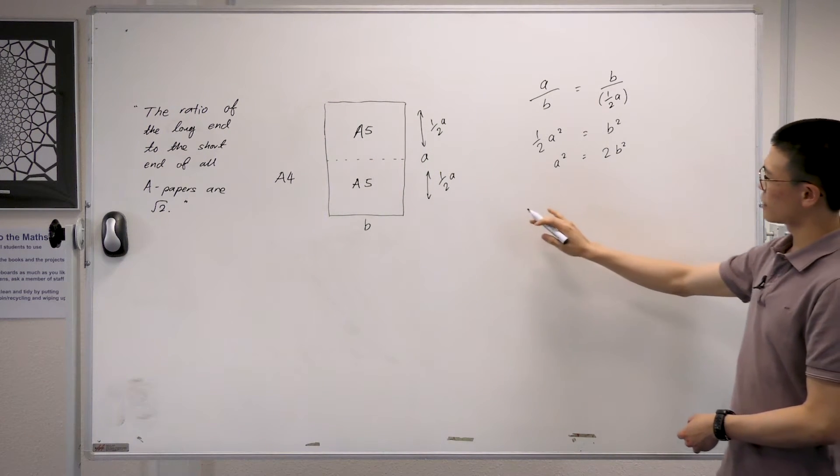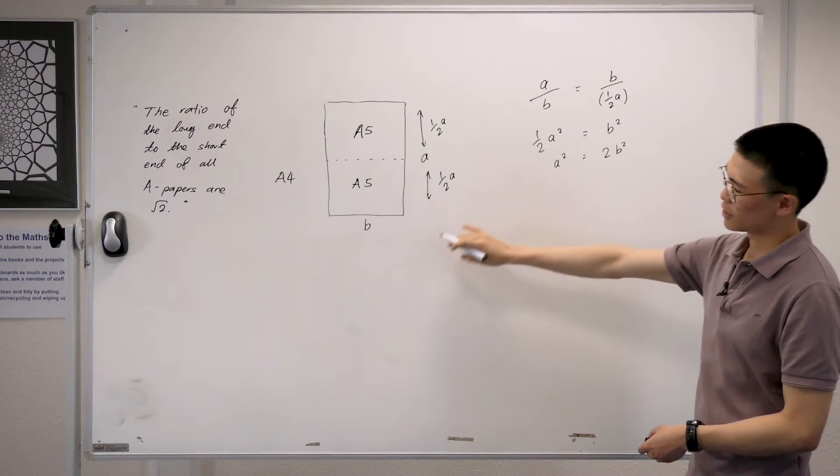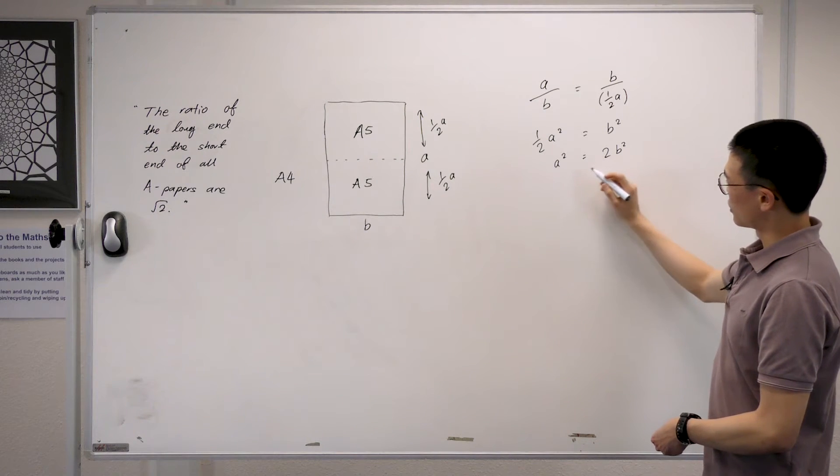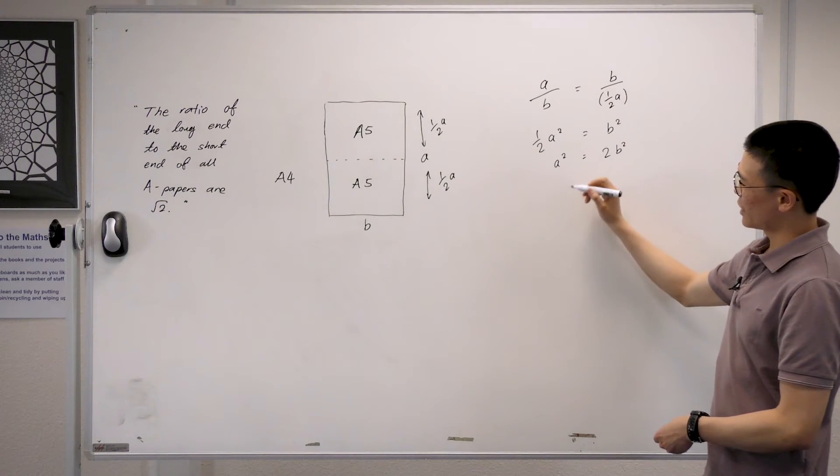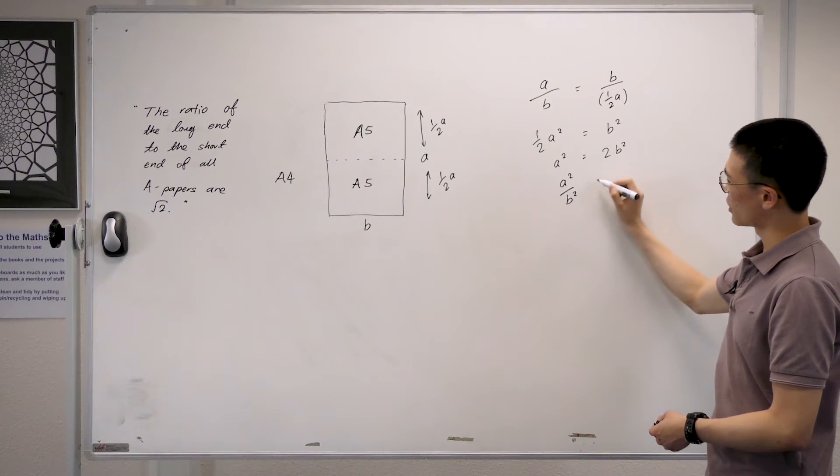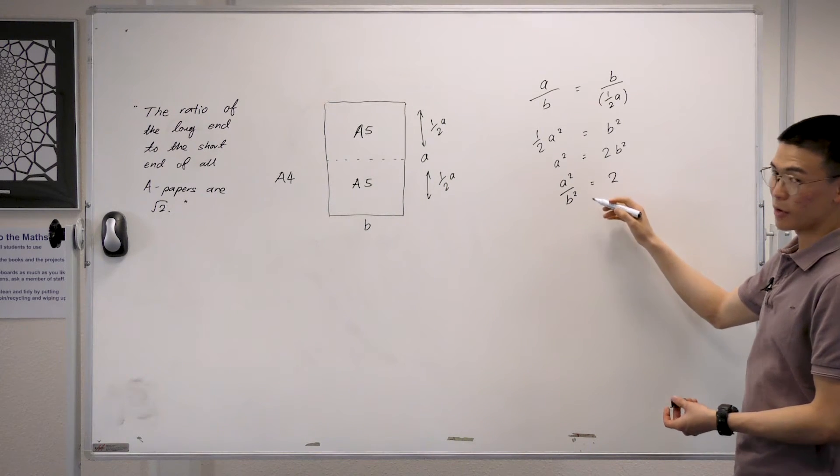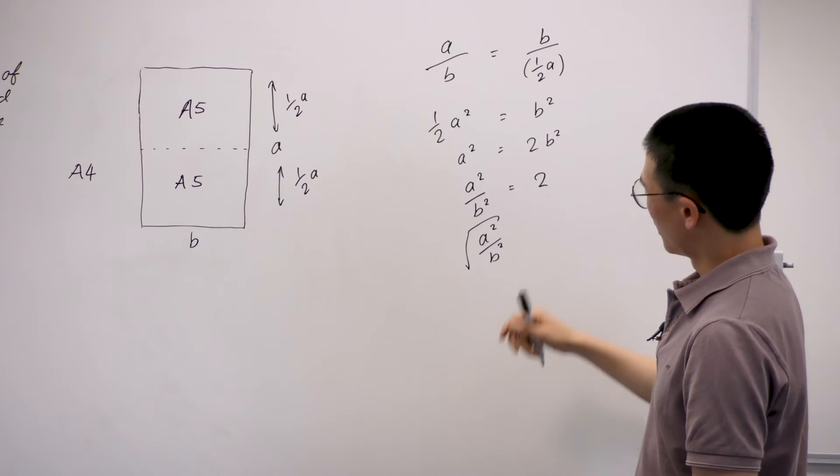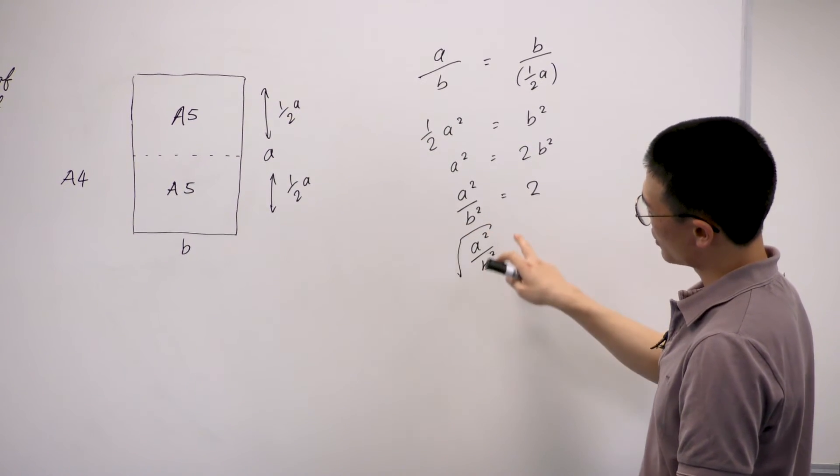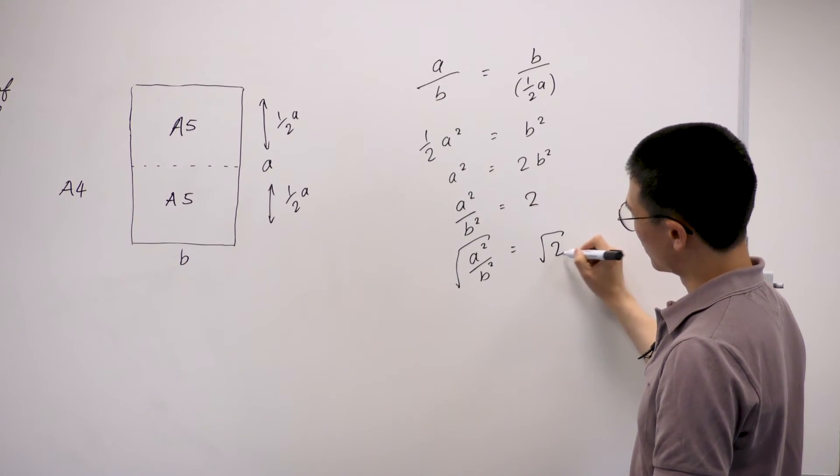And now we look back and see what we're looking for. So we wanted the ratio of the long end to the short end, and that's A over B. So we try to move it to one side such that it looks like A over B. So we have A squared over B squared equals to 2. And now since we have the square, we might as well just square root it. So now if we take A squared over B squared, and we take the square root of that, we can say that this is equal to the square root of 2 as well.